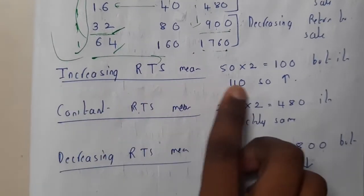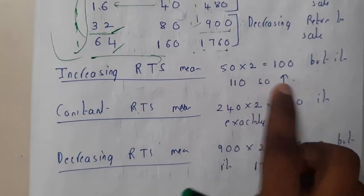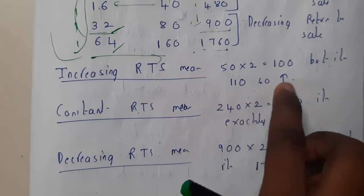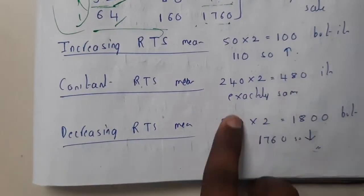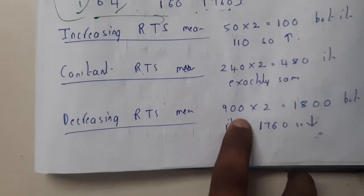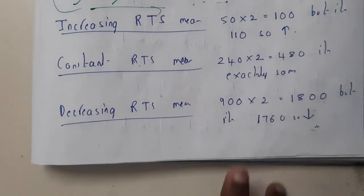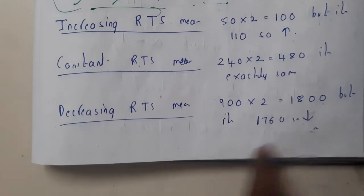Increasing rate of return means 50 times 2 should be 100, but we are getting 110, so we incremented by 10. Constant means we got 240 times 2, which is 480 exactly the same. Decreasing is 900 times 2 should be 1800, but we got 1760, so here we are decrementing.